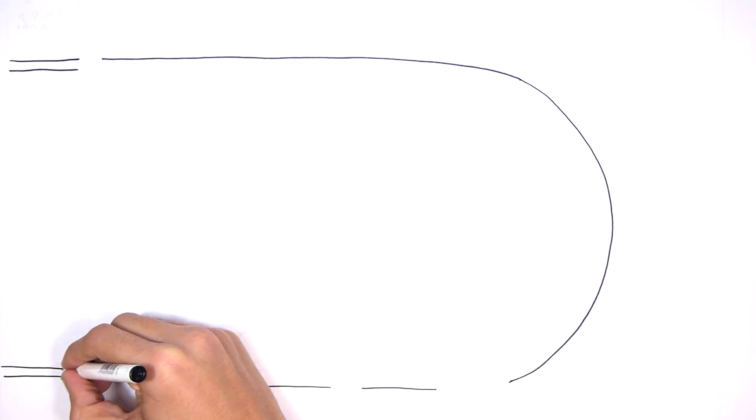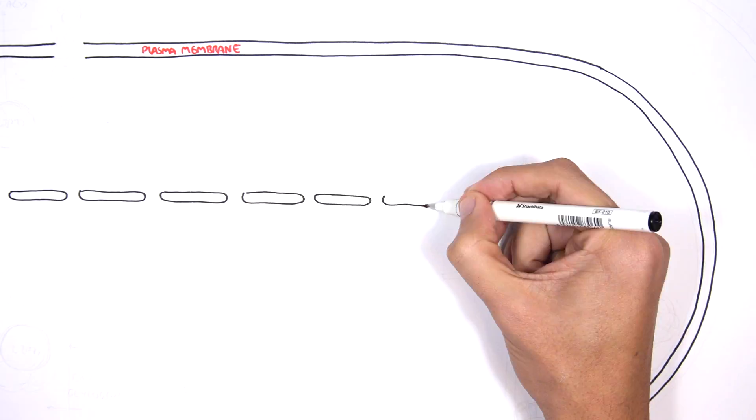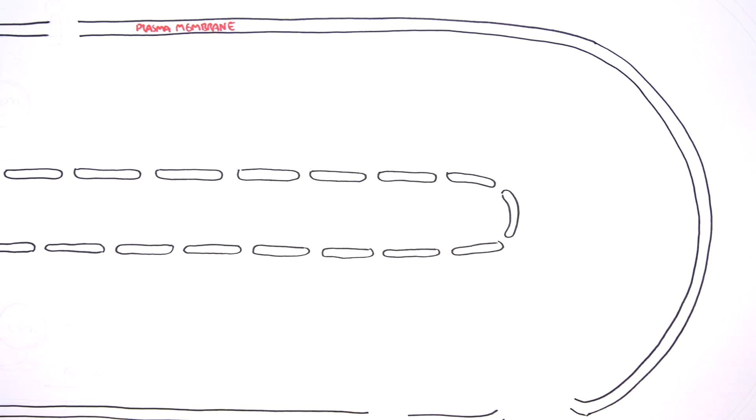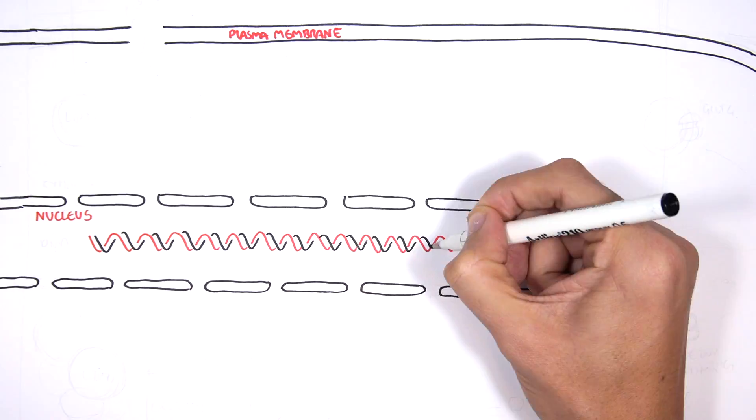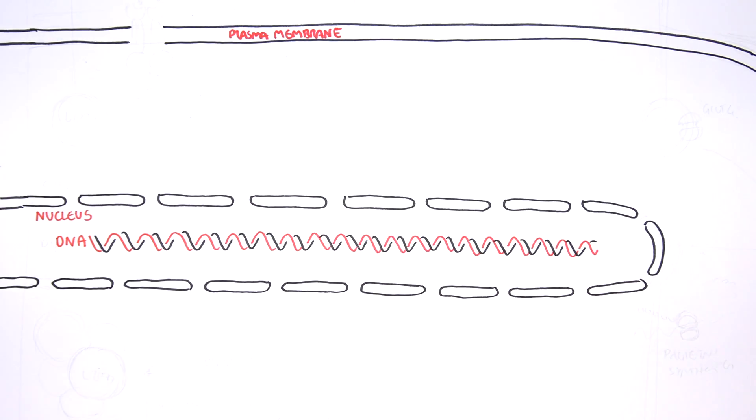Here is a fat cell. This is a cell's plasma membrane. Inside the cell, there is a nucleus which contains the DNA, our genetic material. Surrounding the nucleus is the cytoplasm.